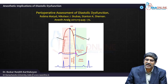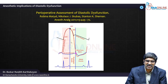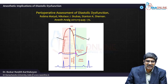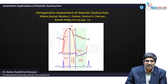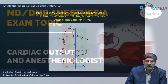Coming to the hemodynamic and the ECG — where is the diastolic period? Usually it starts at the end of systole. Here, this is the ventricular pressure waveform. You can see this is the maximum of the systole. Diastole starts at the end of systole and goes up to the next event.